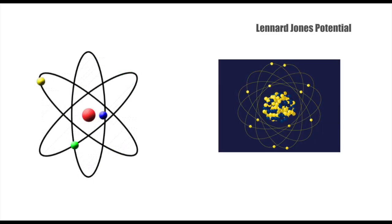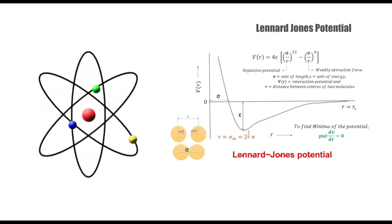The Lennard-Jones potential, often abbreviated as the LJ potential, is a mathematical model that describes how two non-bonded atoms or molecules interact. It's especially useful in understanding the forces at play in gases, liquids, and even biological molecules.